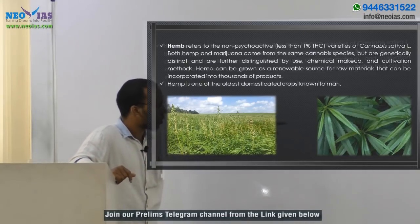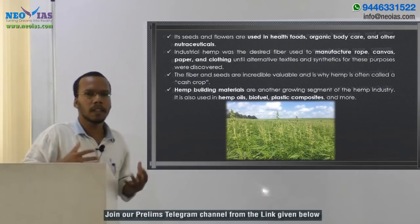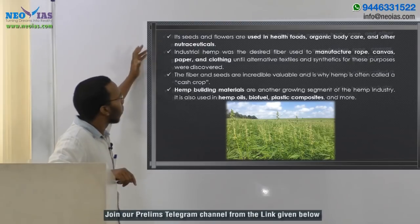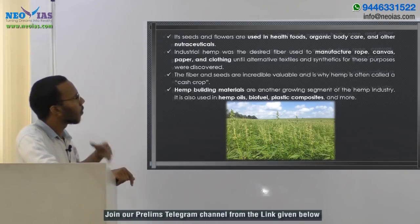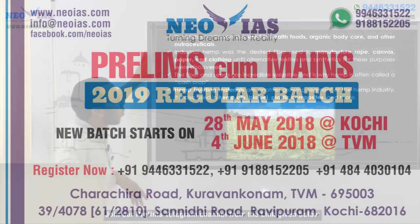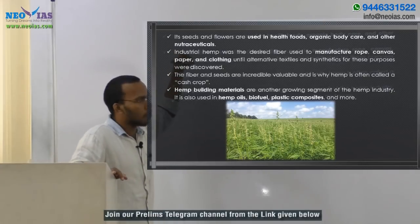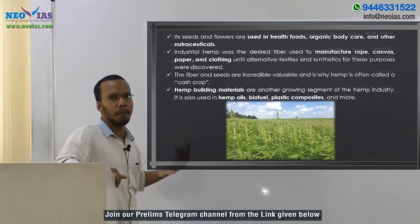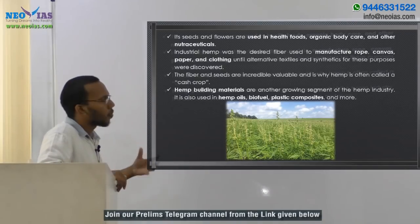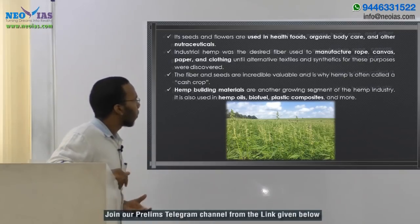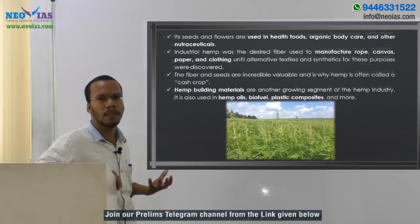This is the hemp plant and hemp cultivation. The seeds and flowers of hemp are used in health foods, organic body care, and other nutraceuticals. Industrial hemp was the desired fiber used to manufacture rope, canvas, paper, and clothing. Hemp is often called a cash crop because its seeds, fiber, and flowers all have incredible value.